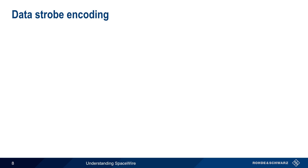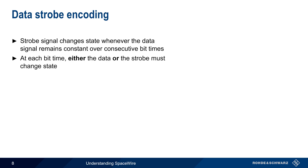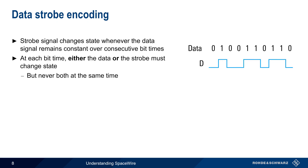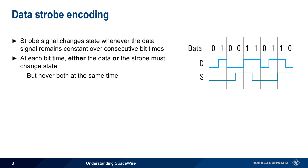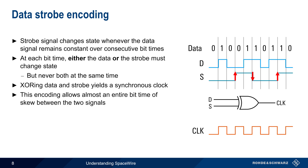Now let's explain data-strobe encoding. In data-strobe encoding, the strobe signal changes state whenever the data signal remains constant over consecutive bit times. Another way of saying this is that at each bit time, either the data signal or the strobe signal must change state, but never both at the same time. For example, if this is the data signal, we see that there are several bit periods during which the signal does not change state — the strobe signal therefore changes state whenever the data signal does not. If we perform an exclusive OR operation on these two signals, the result is a synchronous clock. Another advantage of data-strobe encoding is that it allows almost an entire bit time of skew between the data and strobe signals, which is important for high-speed serial data transfer.